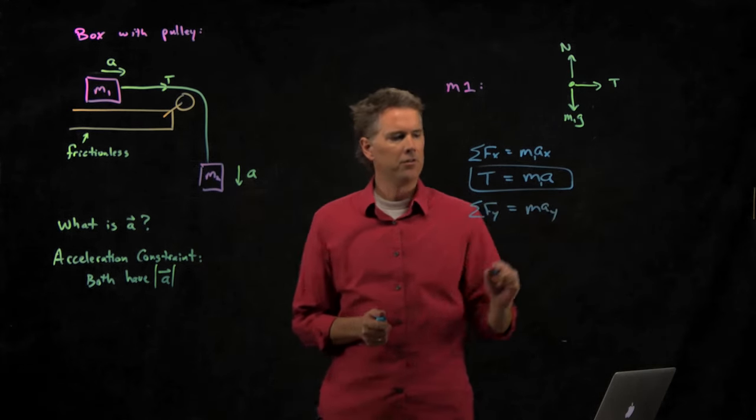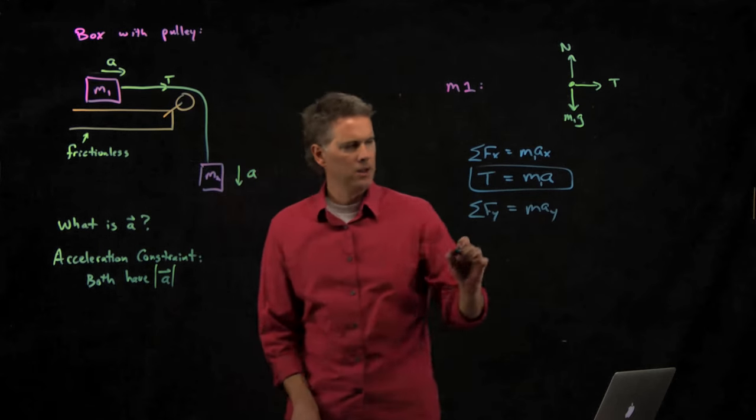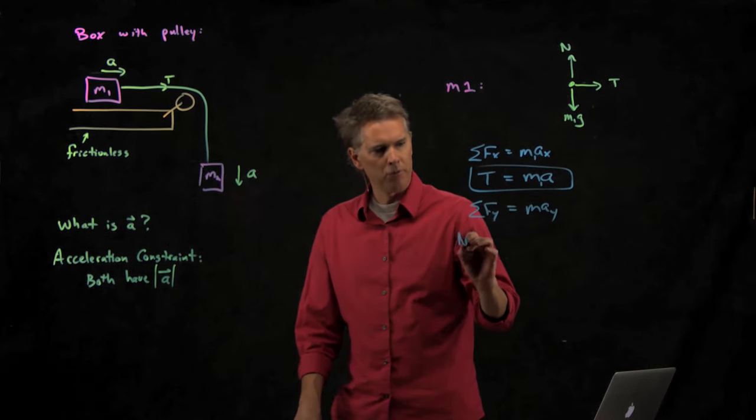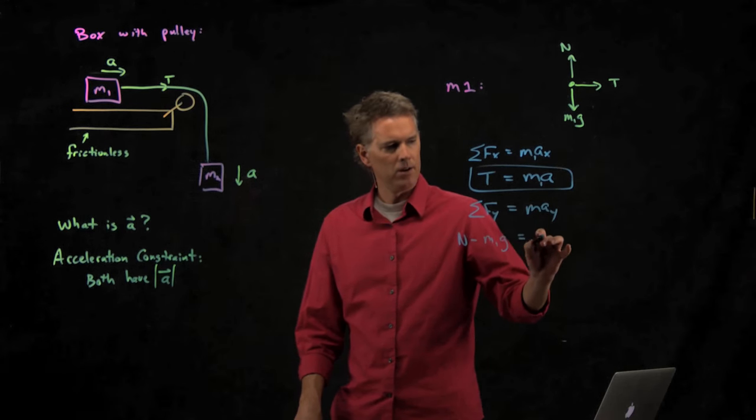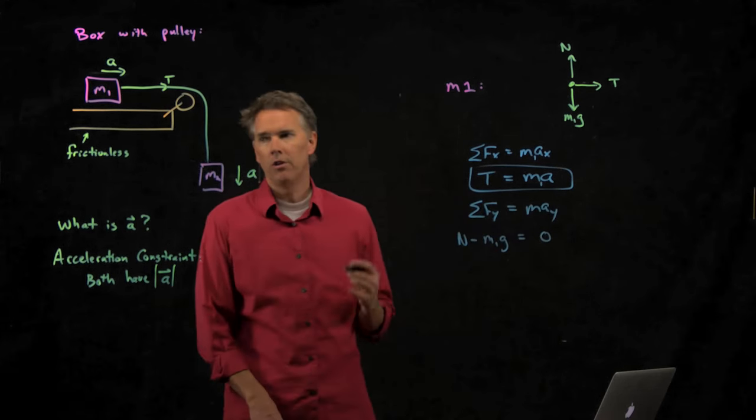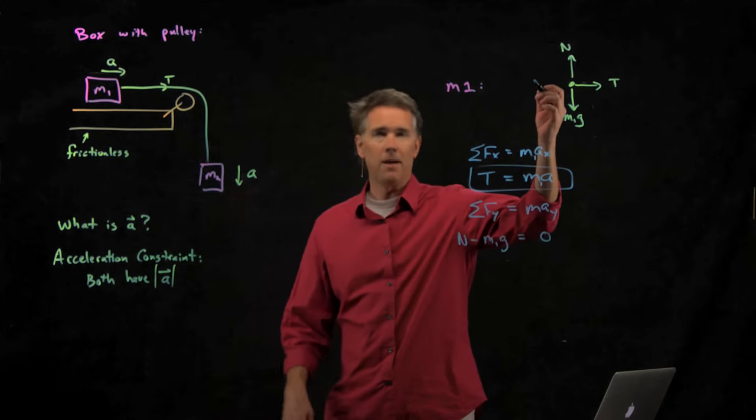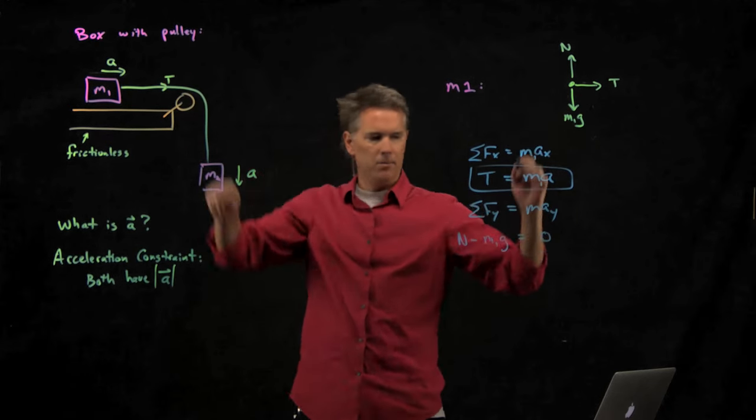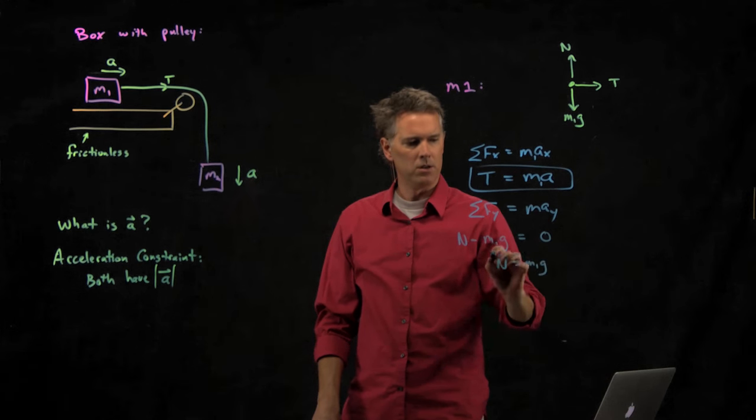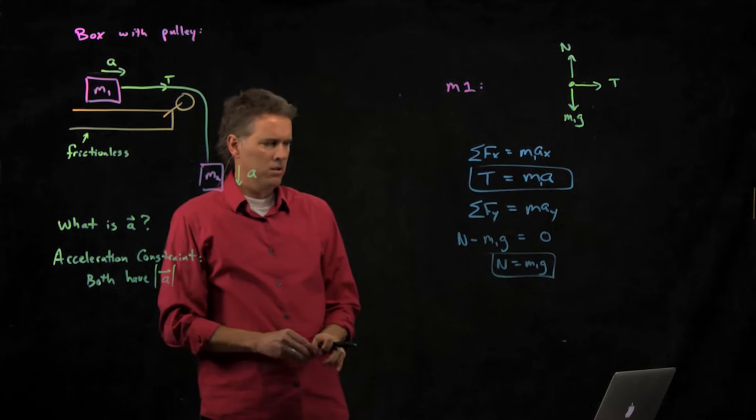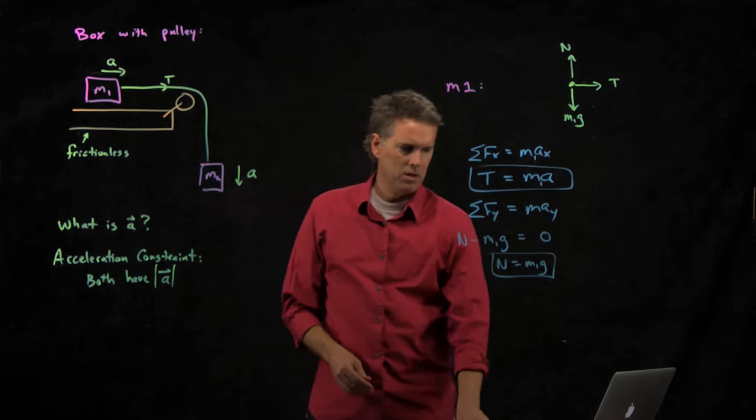Sum of the forces equals the mass times the acceleration in the vertical direction. This is normal force up, M1g down, and that equals zero because that block is not accelerating up or down. So we just get normal force equals M1g.